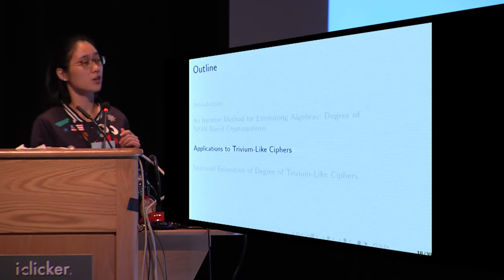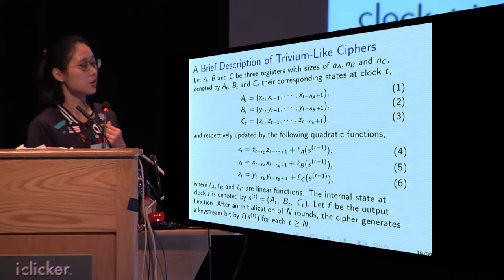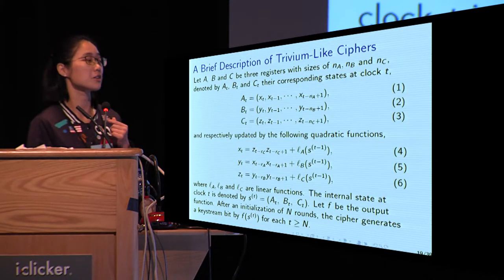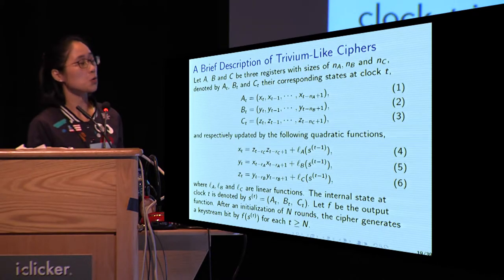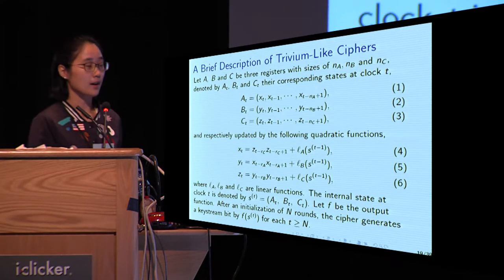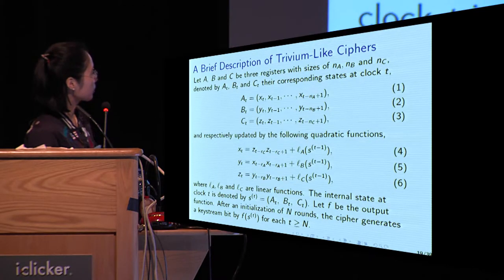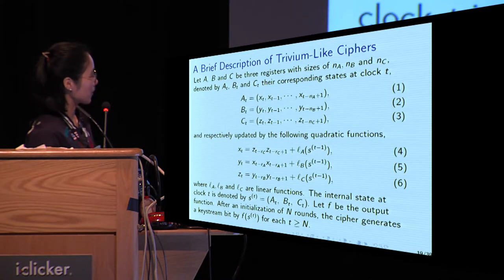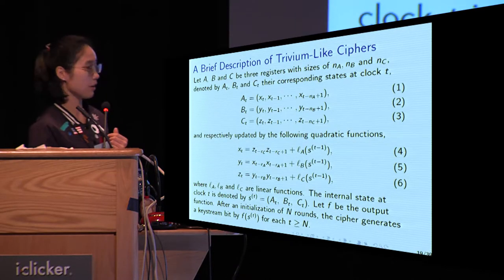We show the application of this algorithm to Trivium-like ciphers. The internal state at clock T consists of three registers A, B, and C. The update functions update three bits each time, each of which is the sum of a single quadratic term and some linear terms. The quadratic term consists of two adjacent bits. After an initialization of N rounds, the cipher outputs a keystream bit using the output function F.